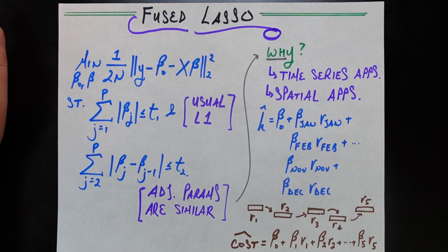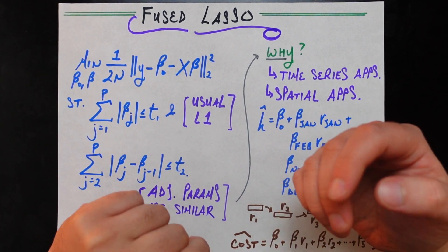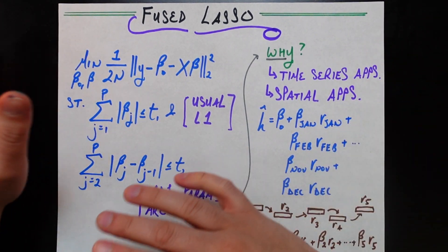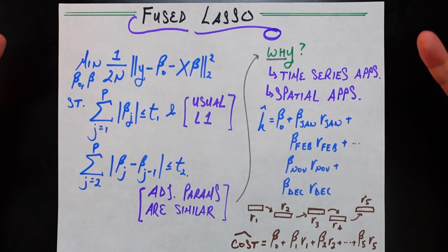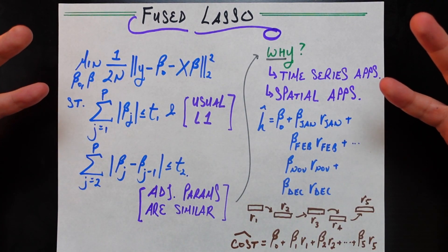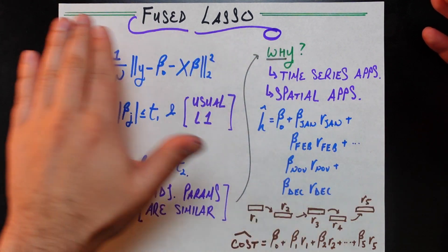Hey, what is up folks? So we just had a video on elastic net regularization, which is an extension of ridge regression and also lasso regression. And while we're on that train, I wanted to talk about another really cool but much lesser talked about extension of lasso regression called the fused lasso.